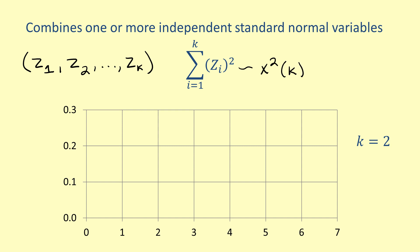What this means is that the chi-square distribution with k degrees of freedom gives the probability distribution function for the sum of the squares of k independent standard normal variables.